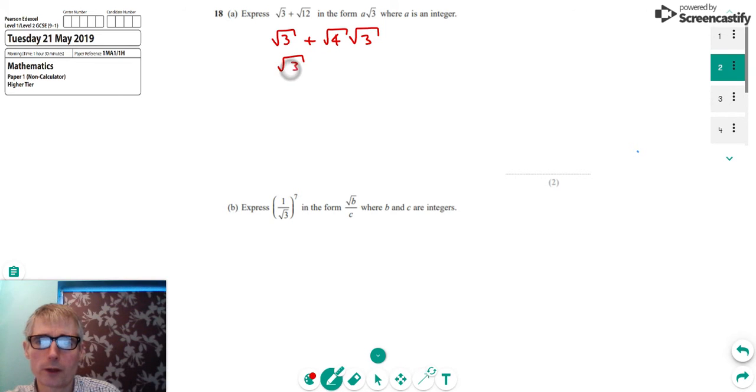So keep that root 3 as it is. But instead of the root 4 there, we can write 2 and still times the root 3 that we previously had. So if we add that together, we've got one root 3 here and we've got two root 3 there. So that will give us 3 root 3 overall. And so we can see that A is actually 3. And we've done it. That's part A of that question.